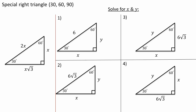In this video we will be going over the special right triangle 30-60-90. So here is the example. This is 30 degrees, this is 60 degrees, and this is 90 degrees. So 30 degrees would correspond to x, 60 degrees would correspond to x times the square root of 3, and 90 degrees would correspond to 2x. We will solve four problems together, but if you want to pause the video and attempt these problems, feel free.